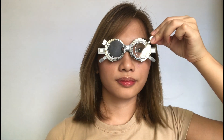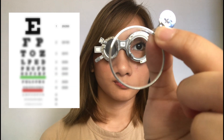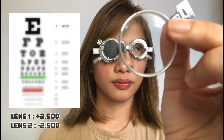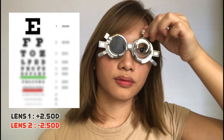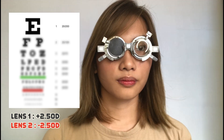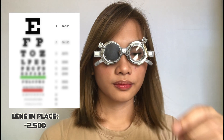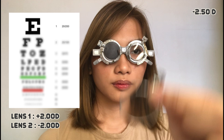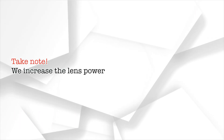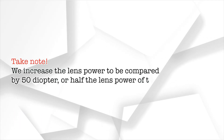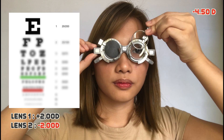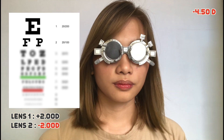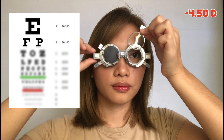Place the lens in front of the trial frame for the patient to compare the minus and plus 2.50 diopter lenses. Ask the patient which lens is better — Lens 1 or Lens 2? The patient chooses Lens 2 and can now see the 20 over 100 line, with a lens in place of minus 4.50 diopters.